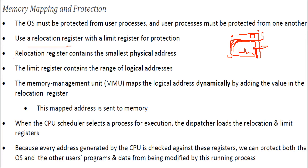The relocation register contains the smallest physical address, and the limit register contains the range of the logical address. What the MMU — memory management unit — does is map the logical address dynamically by adding the value of the relocation register, which is simply an addition value, the same for all. This mapped address is then sent to memory.